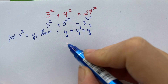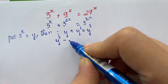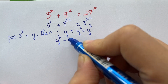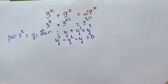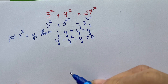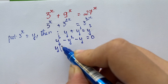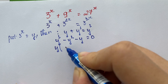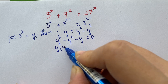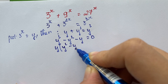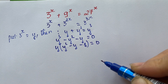So therefore, we have y squared minus y cubed minus y squared minus y equals 0, right? And everyone can see y is a common factor in this equation. So we have y times (y squared minus y minus 1) equals 0.